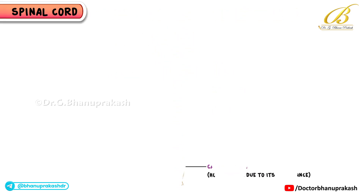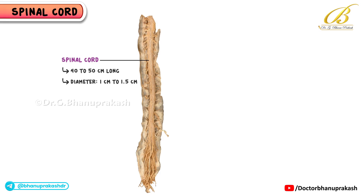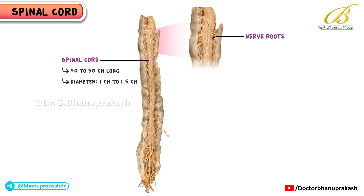Here we see details on the length and diameter of the spinal cord. It's about 40 to 50 centimeters long, with a diameter ranging from about 1 centimeter to 1.5 centimeters. Along each side, two continuous rows of nerve roots emerge, which join distally to form 31 pairs of spinal nerves.